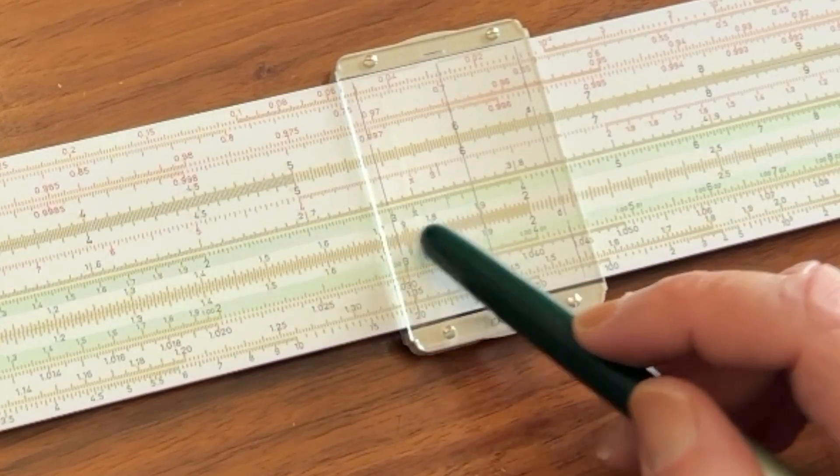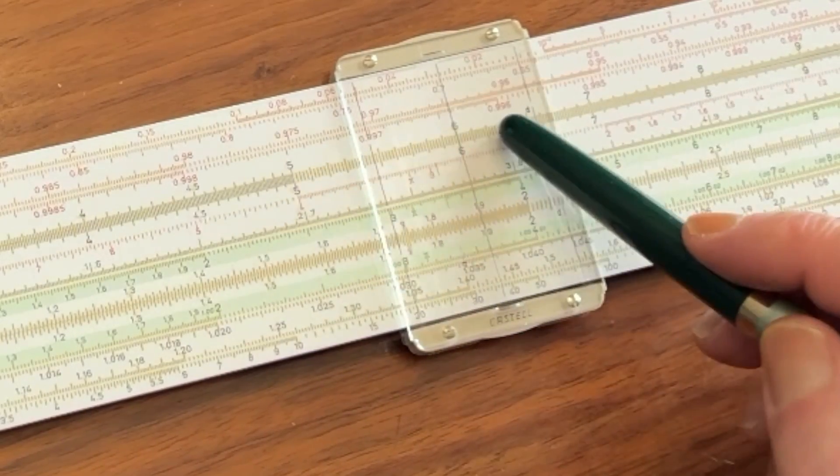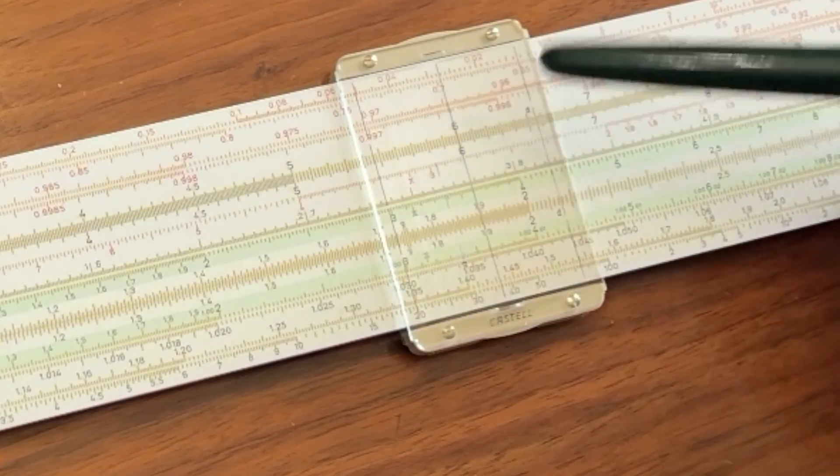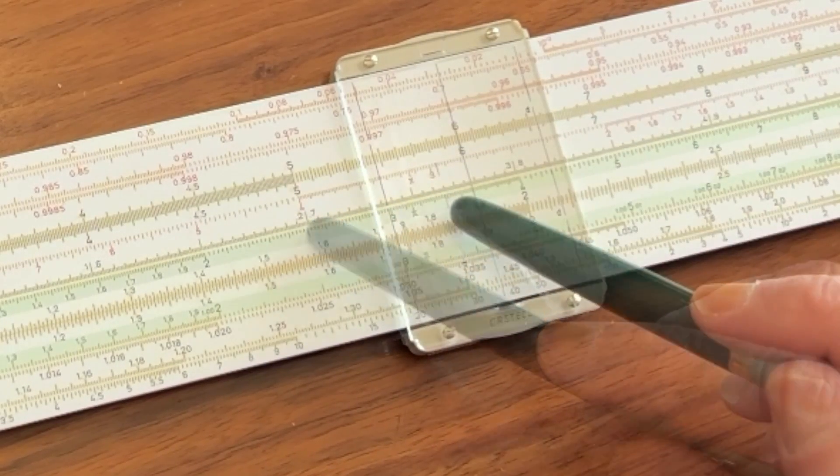that 0.2 would be for the log of a number down here in the 3s. The 0.7 is for the log of the numbers up here on the upper scale, the higher numbers. So we're going to read the log of 6 as being 7.77.